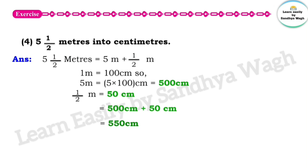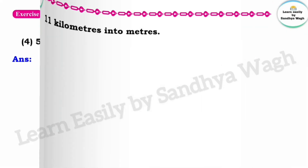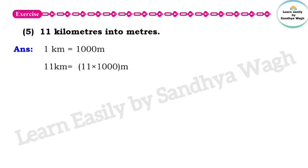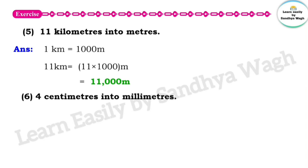So 5 and a half meters is equal to 550 centimeters. Next question: 11 kilometers into meters. 1 kilometer is equal to 1000 meters, so we multiply 11 by 1000 meters. Therefore, 11 kilometers is equal to 11,000 meters.